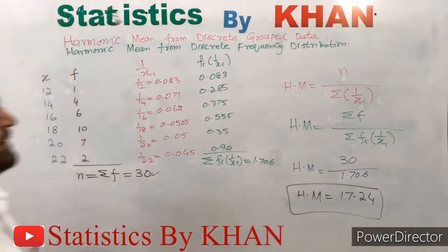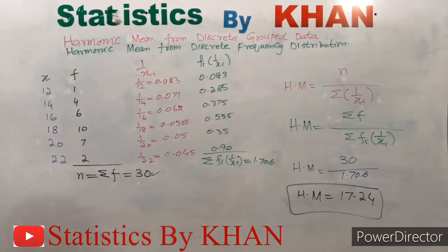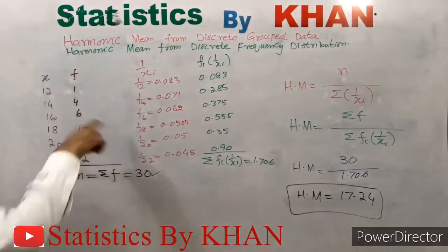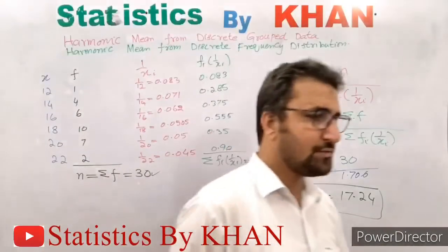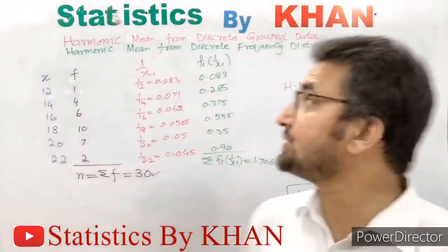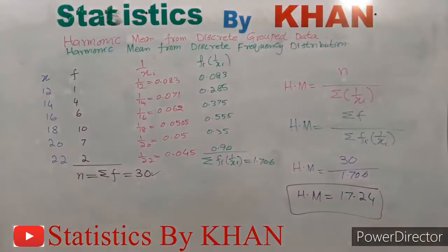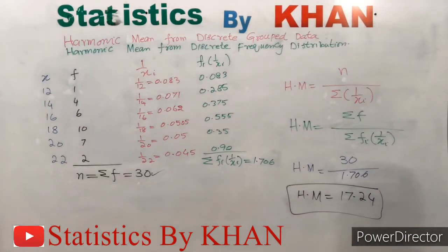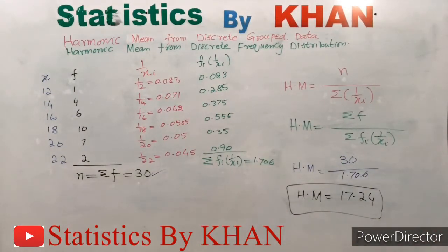The final answer of the harmonic mean is 17.24. This is the harmonic mean of this data set. This was a simple example from discrete grouped data or discrete frequency distribution, demonstrating the steps needed for computation of the harmonic mean.